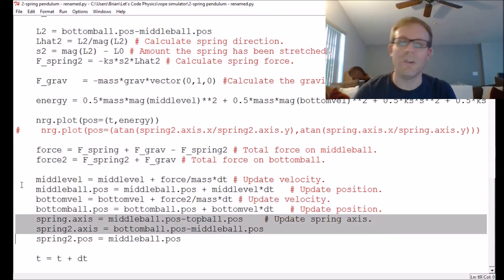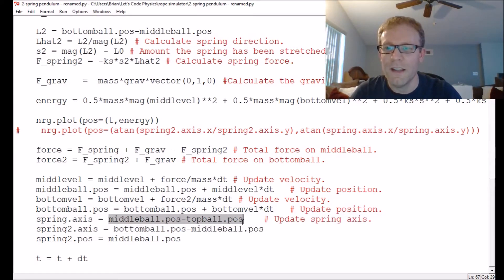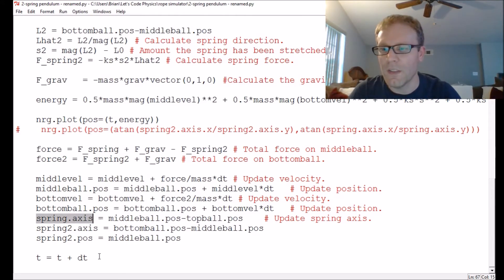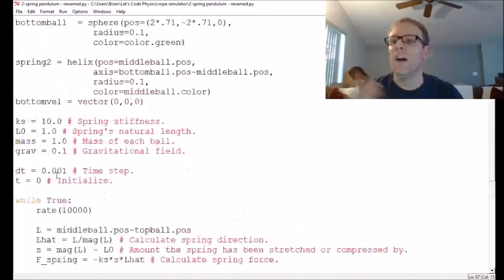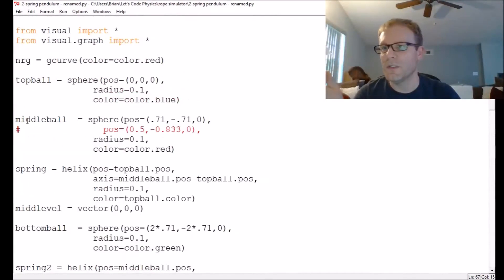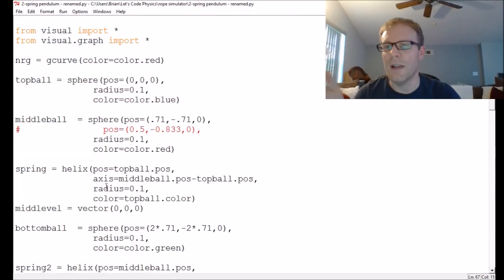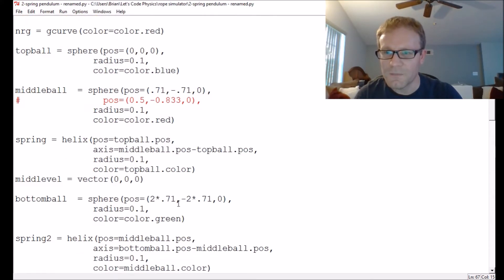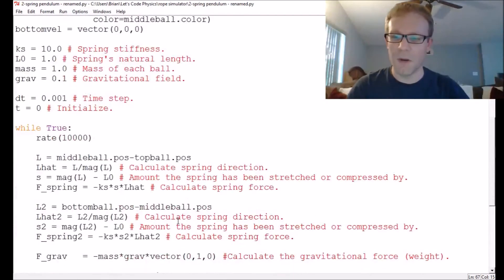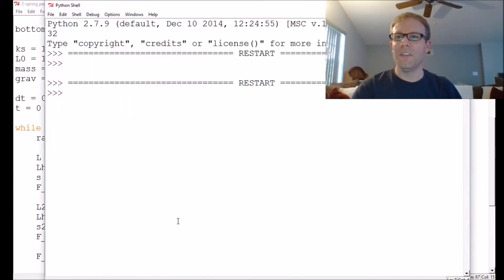And then we also have to update the springs. So I've created two springs in vPython. A spring has to have two properties. It's got to have a position. So we have to update where each of them begins. And then it's got to have an axis. And that just tells you what direction they each point in. And of course, we're incrementing time forward. All the three balls and the two springs are set up up here at the top. Their colors are going to be blue, red, and green. So that way we can tell them apart pretty easily. Let's hit F5 and run this code.